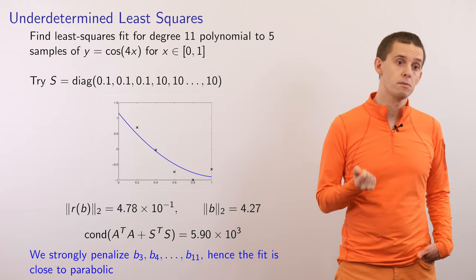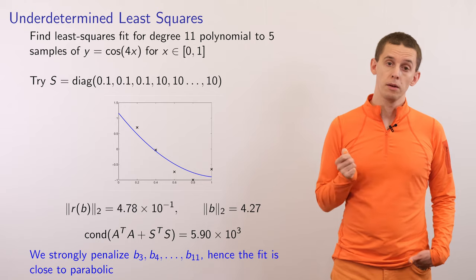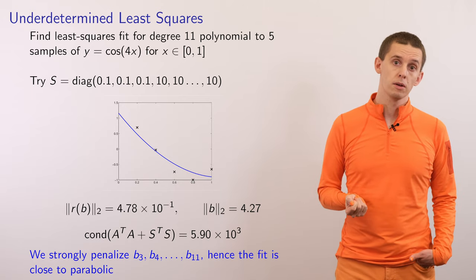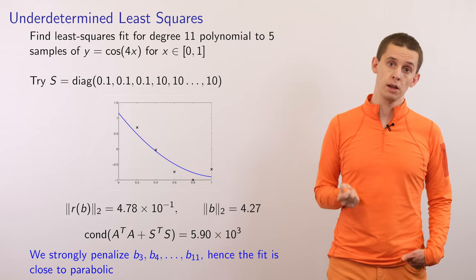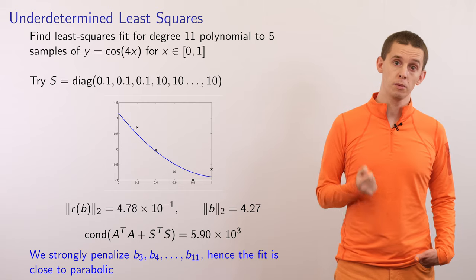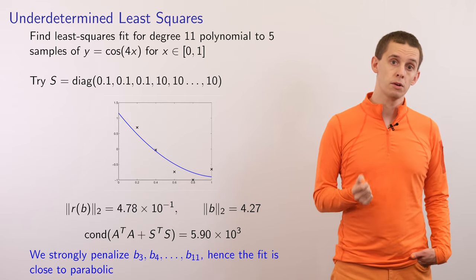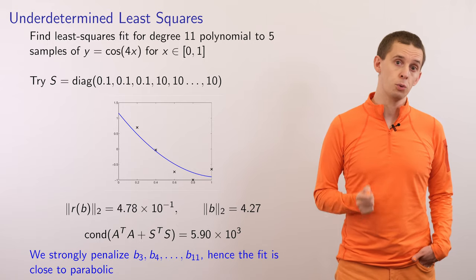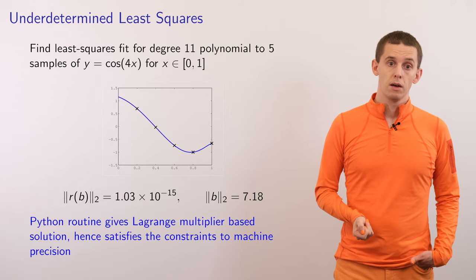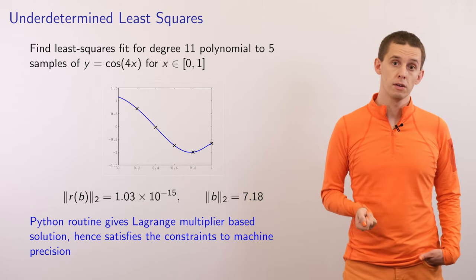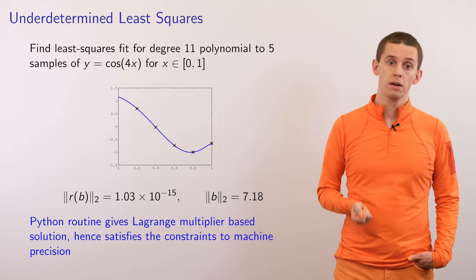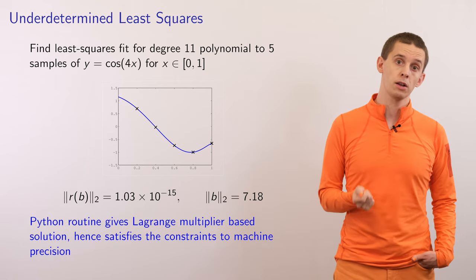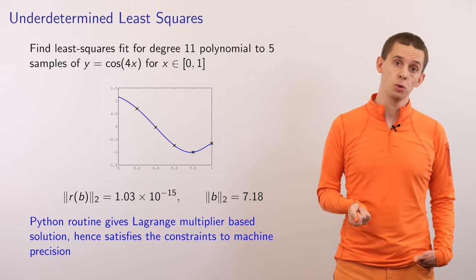In a third case, we set S equal to a diagonal matrix where the first three terms on the diagonal are 0.1 and the rest are 10. This means we're weakly penalizing quadratic terms and strongly penalizing any term above quadratic. The resulting polynomial indeed looks rather like a quadratic, with those higher order terms strongly penalized. Our Python program can also solve the constrained case, where we satisfy the data points exactly — with a residual close to machine precision — and our b vector works out as 7.18.